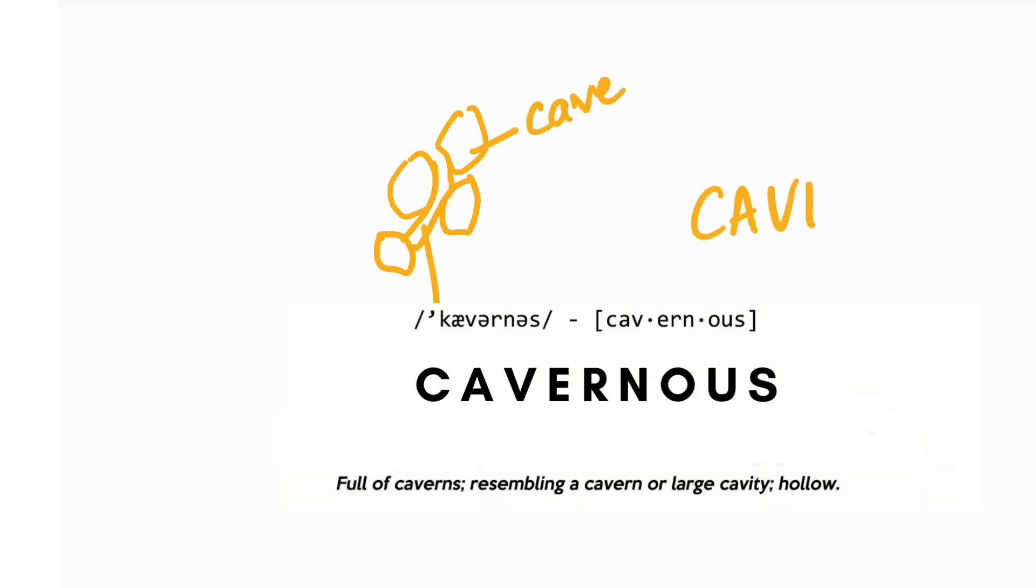The cavernous sinus is divided into small caves via septa. So this is septa and these are the caves. Hence the name cavernous.